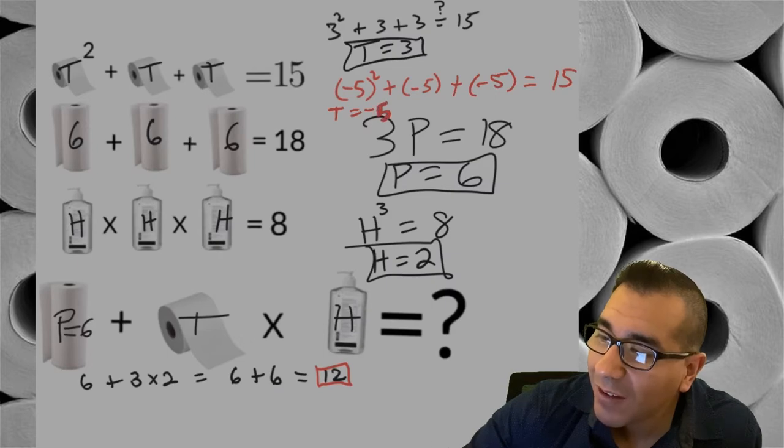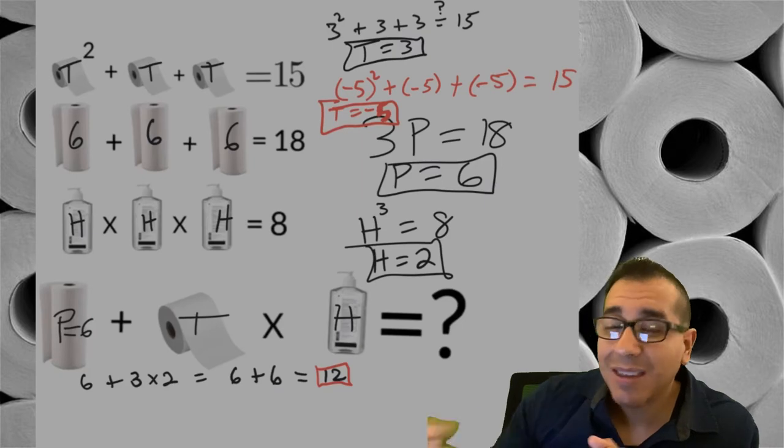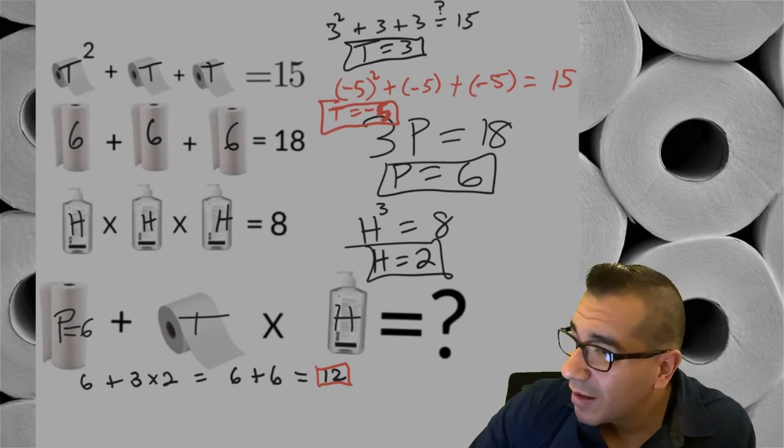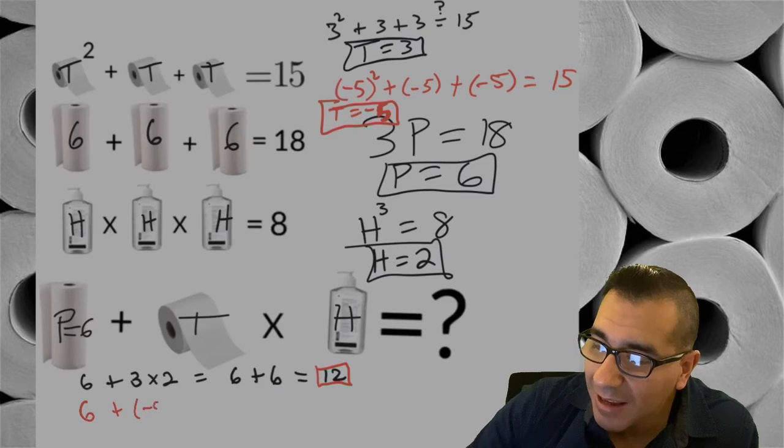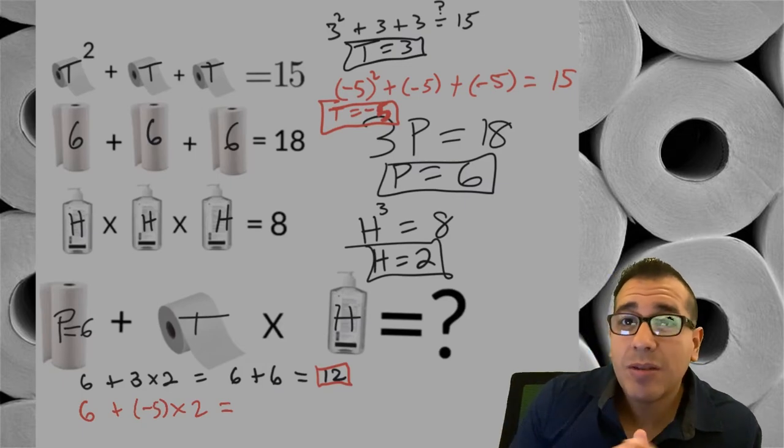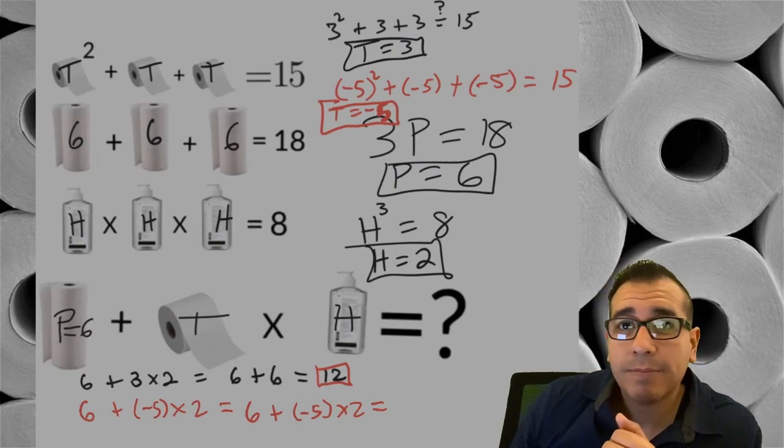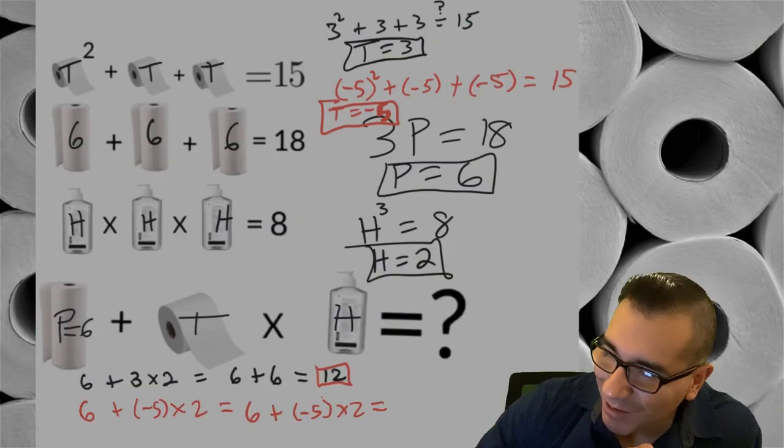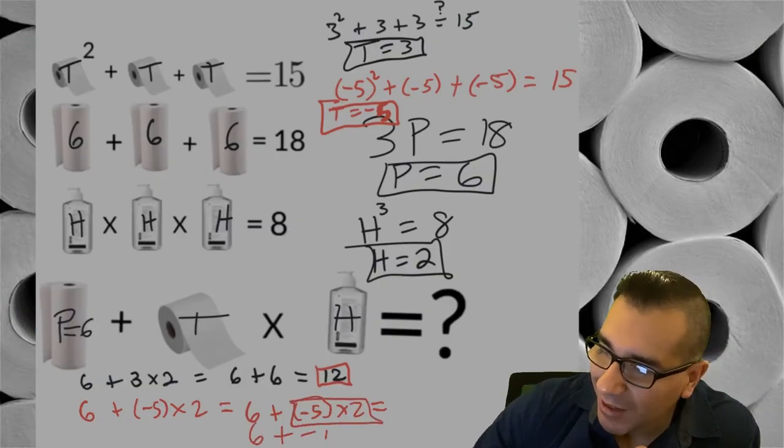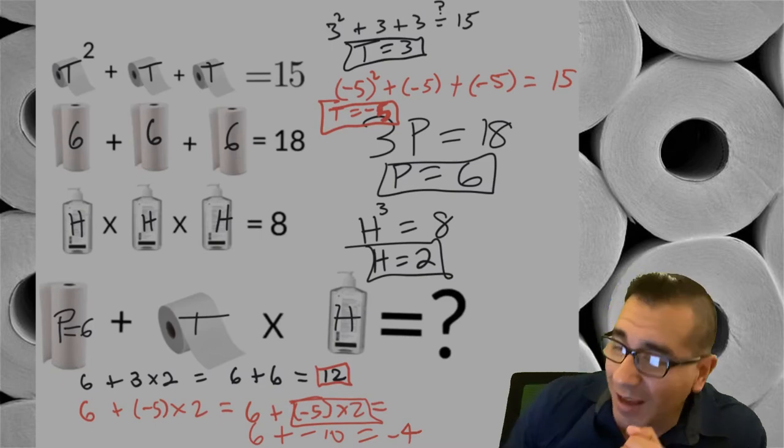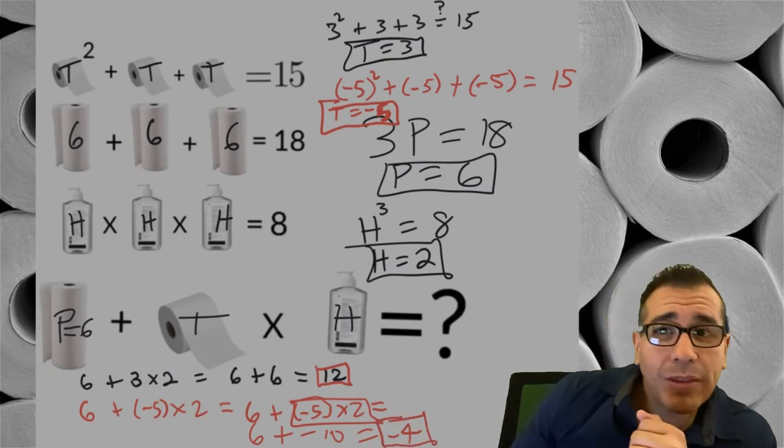So now let's plug in the negative five into our last equation. So we end up with - I'll write this in red - six plus negative five times two. So doing the order of operations we end up with six plus negative five times two. This right here is negative 10, so we end up with six plus negative 10, and so six plus negative 10 is negative four. So if you got those two answers of 12 and negative four, then you are truly a mathlete.